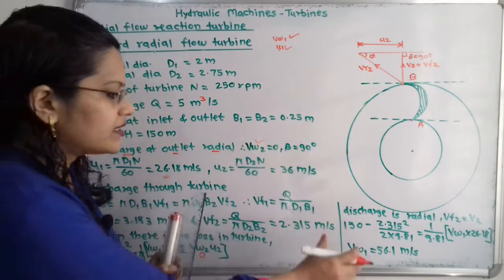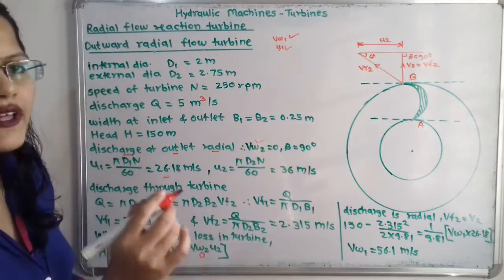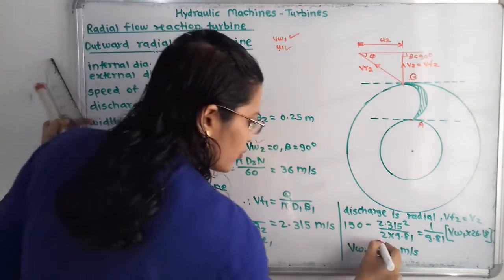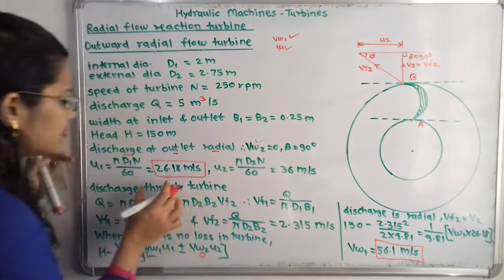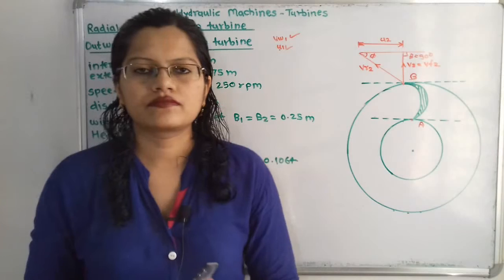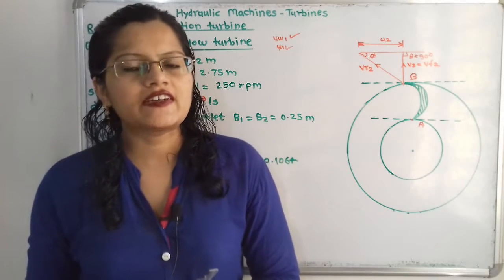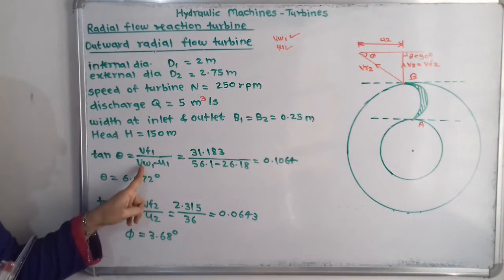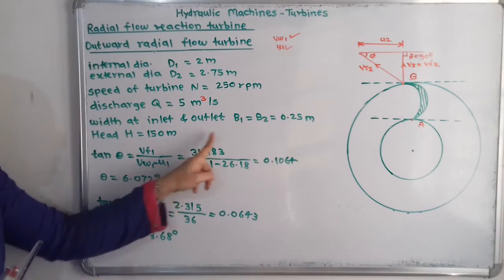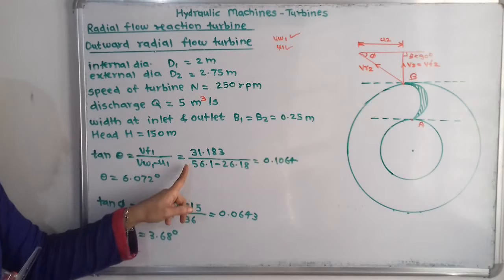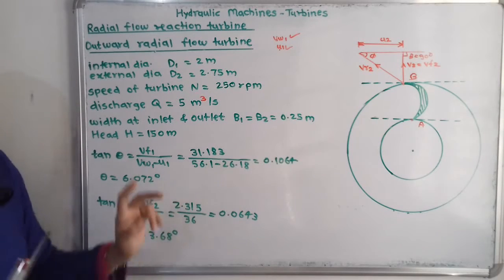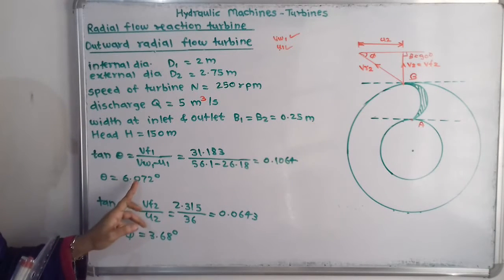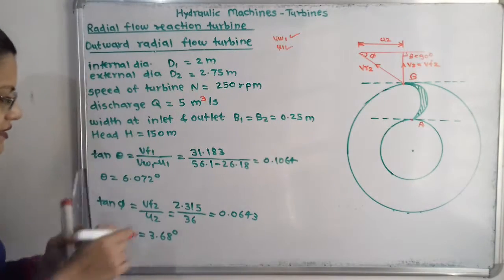It is important to note that we now compare Vw1 and U1. Since Vw1 (56.1 m/s) is greater than U1 (26.18 m/s), the condition Vw1 > U1 applies. Using tan θ = Vf1 / (Vw1 − U1), substituting all known values, we get tan θ = 0.1064, so angle theta = 6.072 degrees. This is an acute angle.